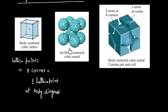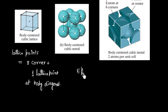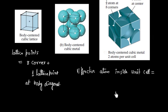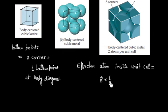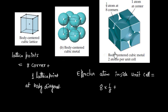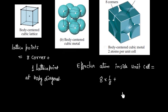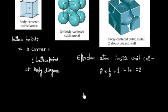Now, the effective number of atoms enclosed inside 1 unit cell can be calculated as follows. We have 8 corner atoms, and each corner atom has a contribution of 1/8. Plus we have 1 body centered atom, which is totally inside the cube, so its effective contribution is 1. Therefore, the effective number of atoms inside this cubic unit cell is 2.